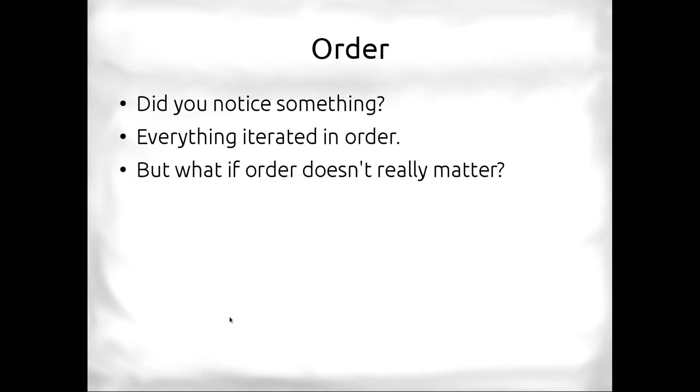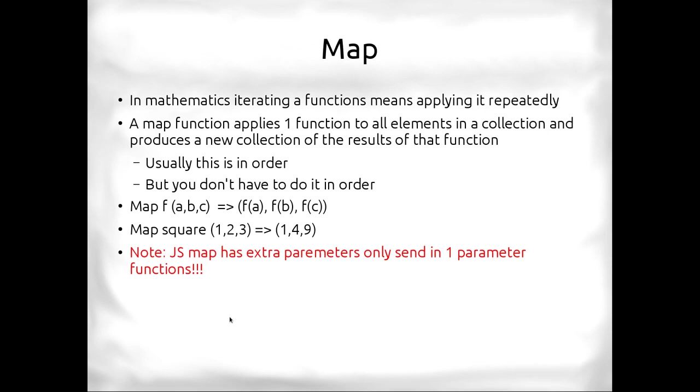Where order matters or not, the reason why we're asking this question is because we want to see if we can do things out of order. Now, you're thinking, if you already know the map function, you're thinking, hey, the map is in order. In the end, it produces an ordered list, yes. But really, a map in mathematics is just iterating a function and applying it repeatedly and getting that result. A map function applies one function to all the elements in a collection and produces a new collection. It doesn't change the old collection. It doesn't mutate it. This is done in order.